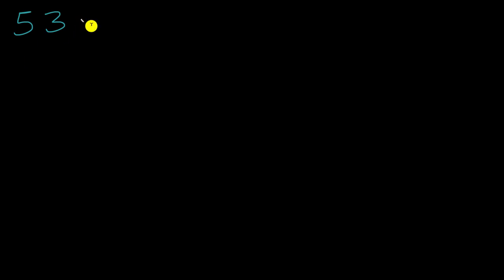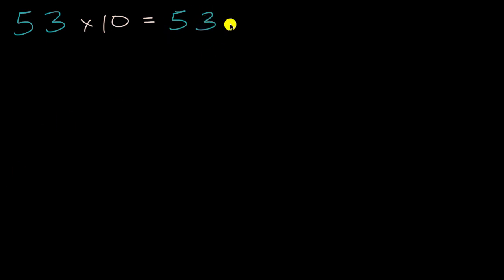We've already learned that when we multiply by 10 — let's say we took the number 53 and multiplied it by 10 — it has the effect of shifting all the digits one place to the left. So this should be a review for you, but this was going to be 530. What used to be in the tens place has been shifted to the hundreds place, and what used to be in the ones place has been shifted to the tens place.